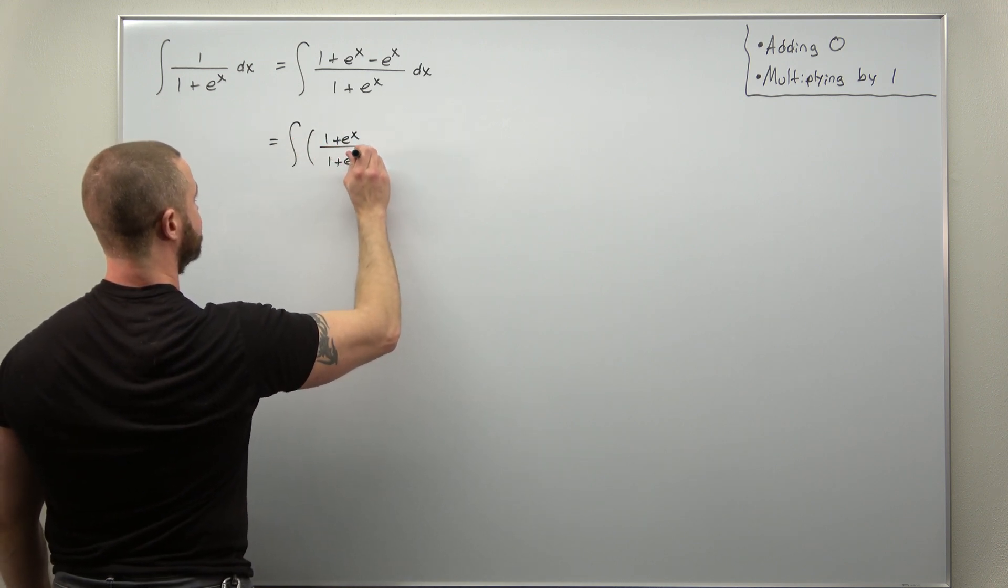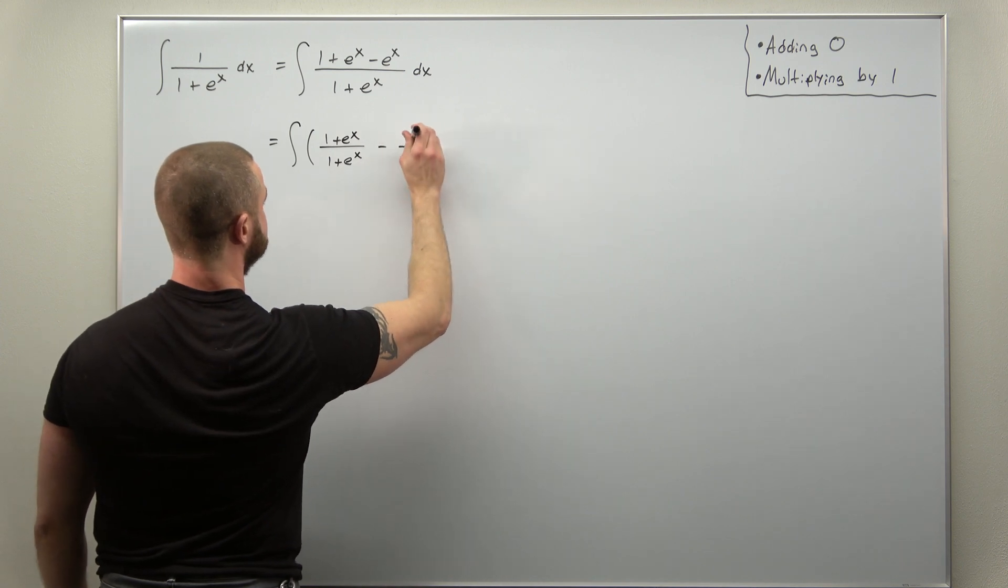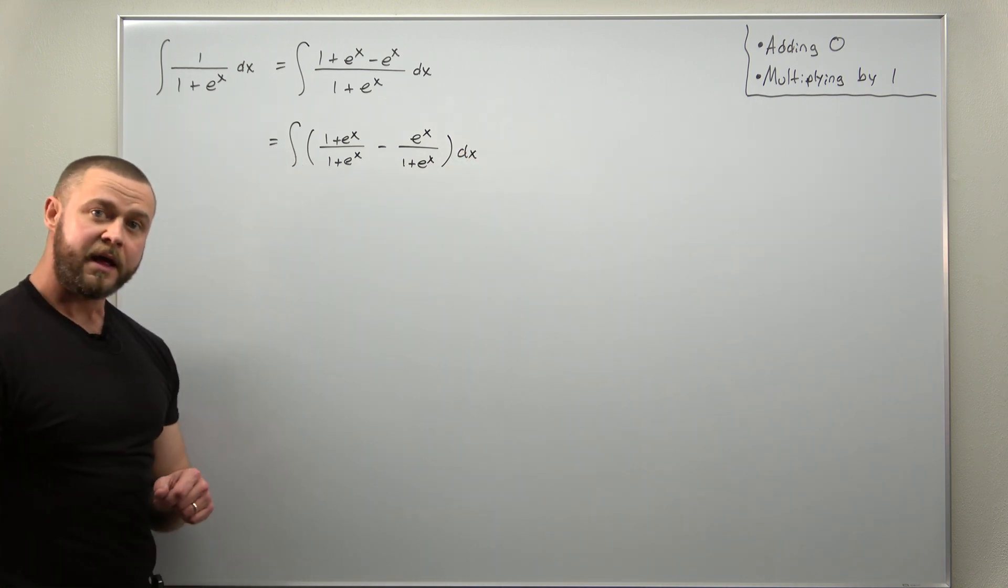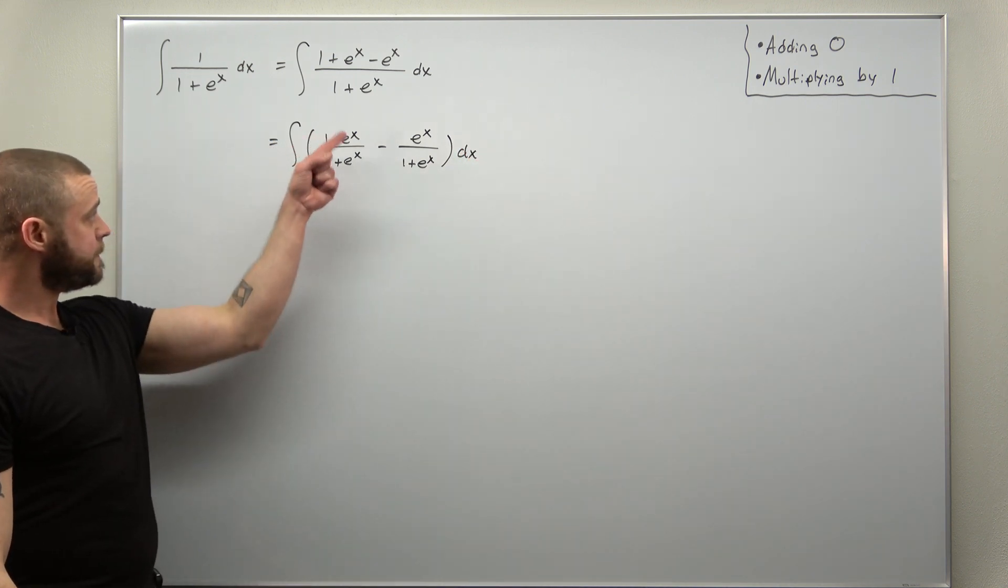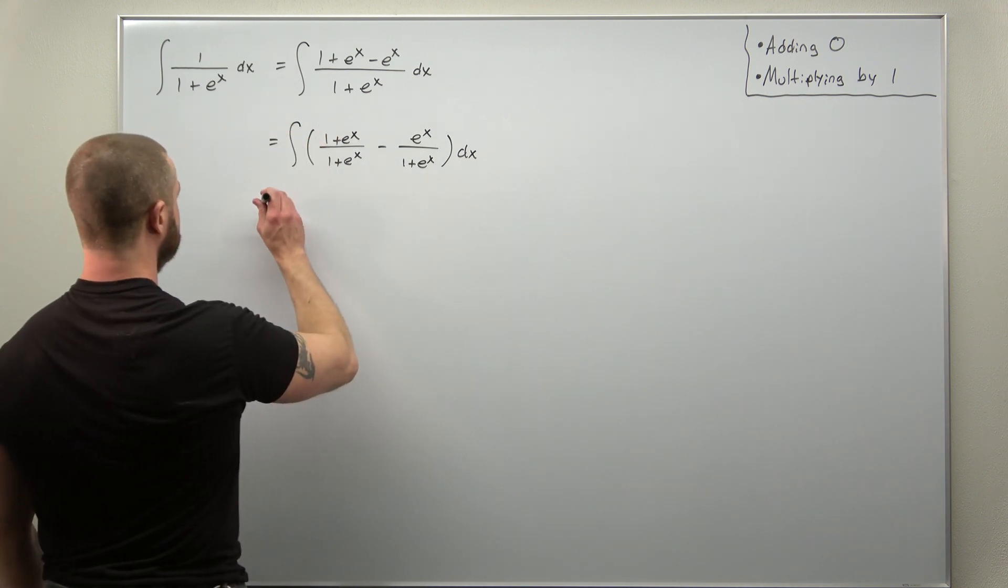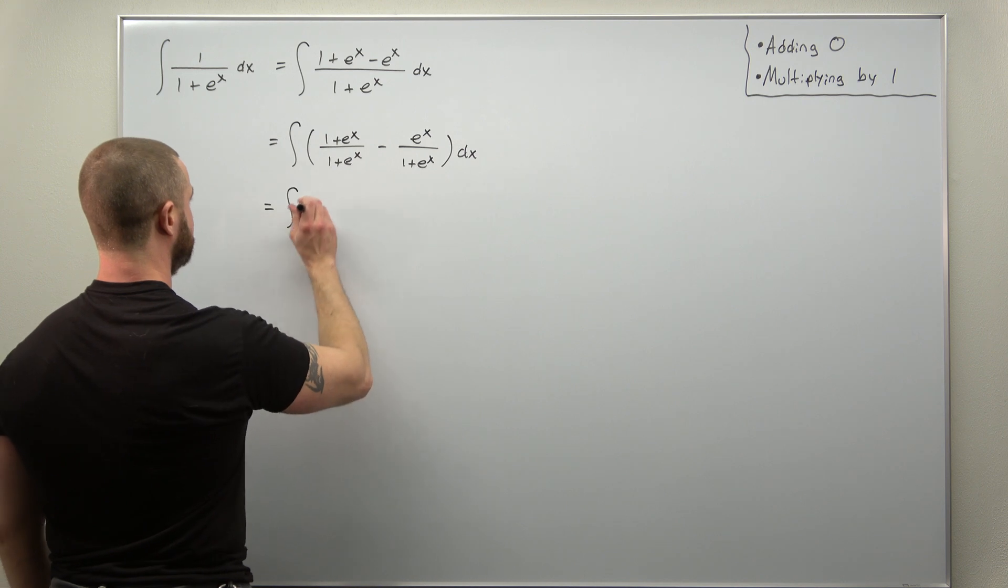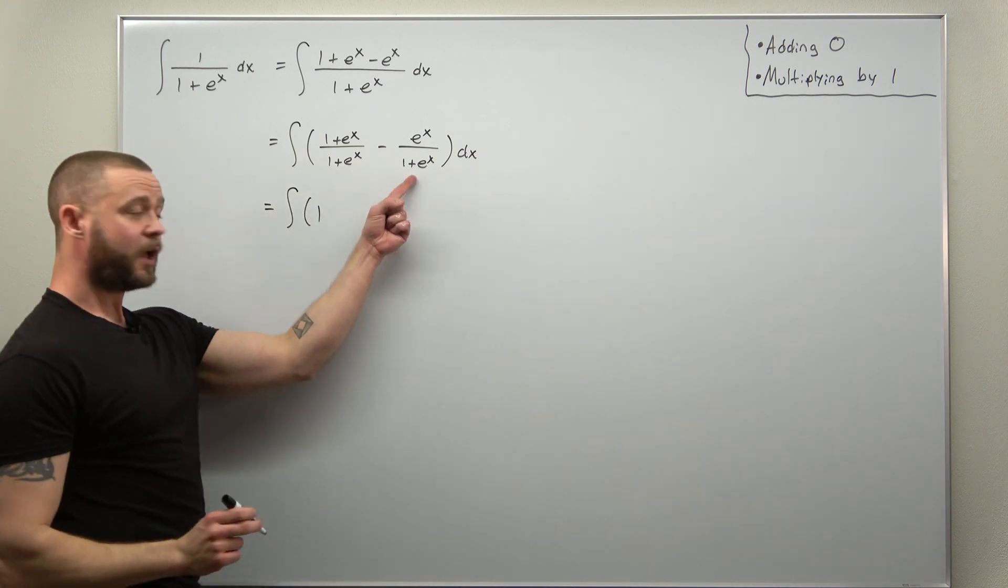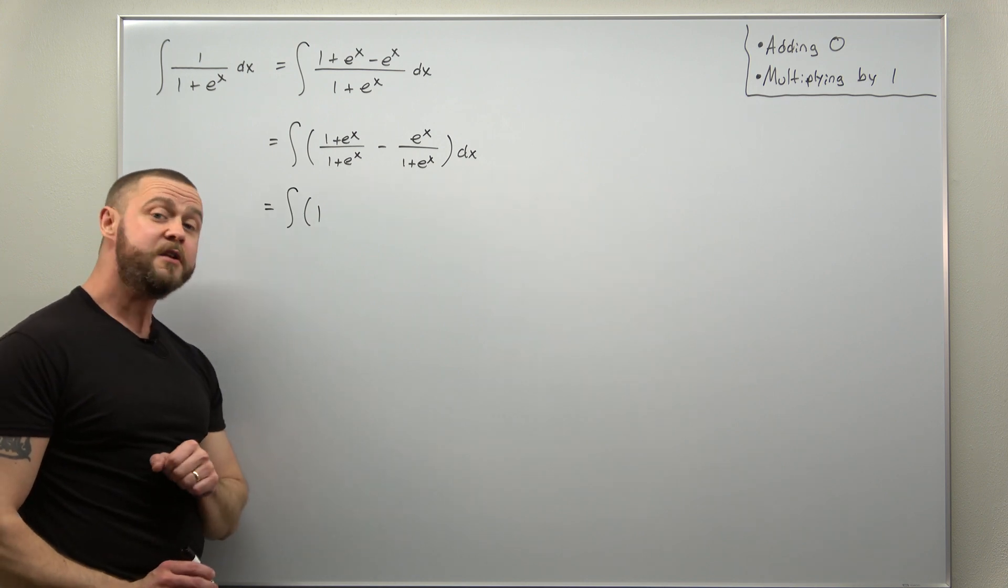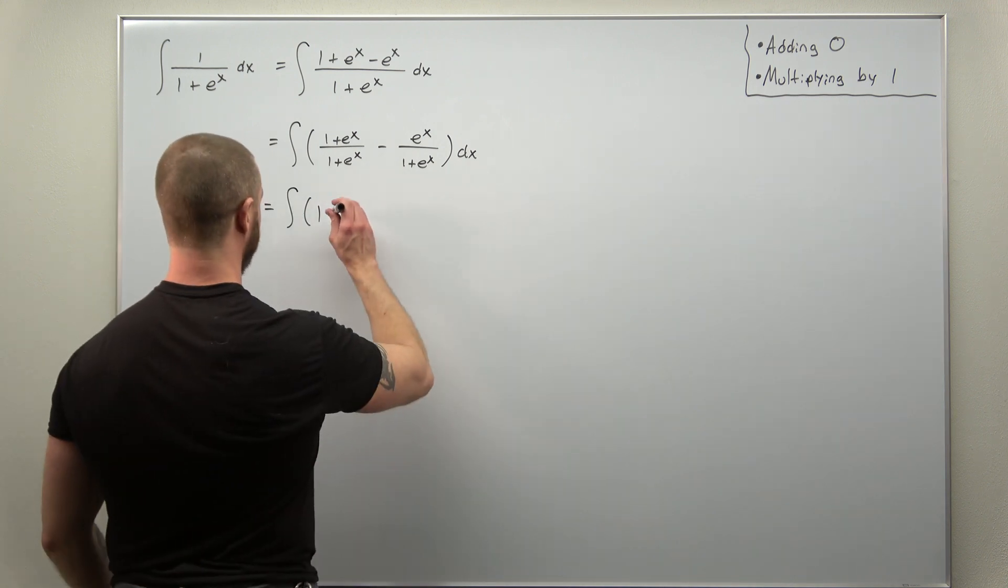All right, so just take your time and this simplifies considerably. As we mentioned, we're going to get this part canceling out to 1. So we're going to have the integral of 1 and then the second part, that's where we can now use our initial substitution that we wanted to work.